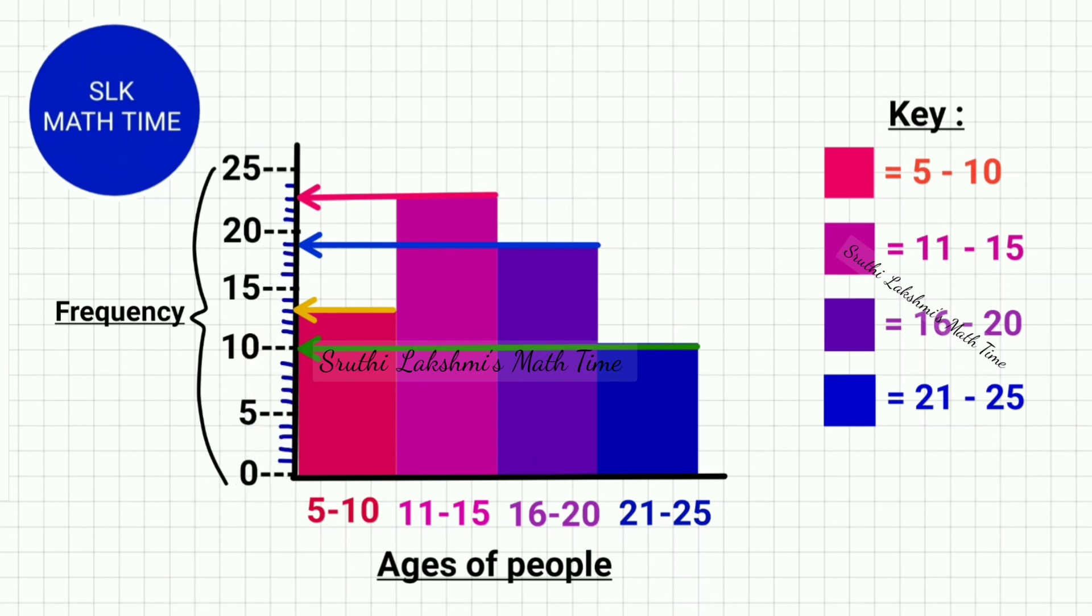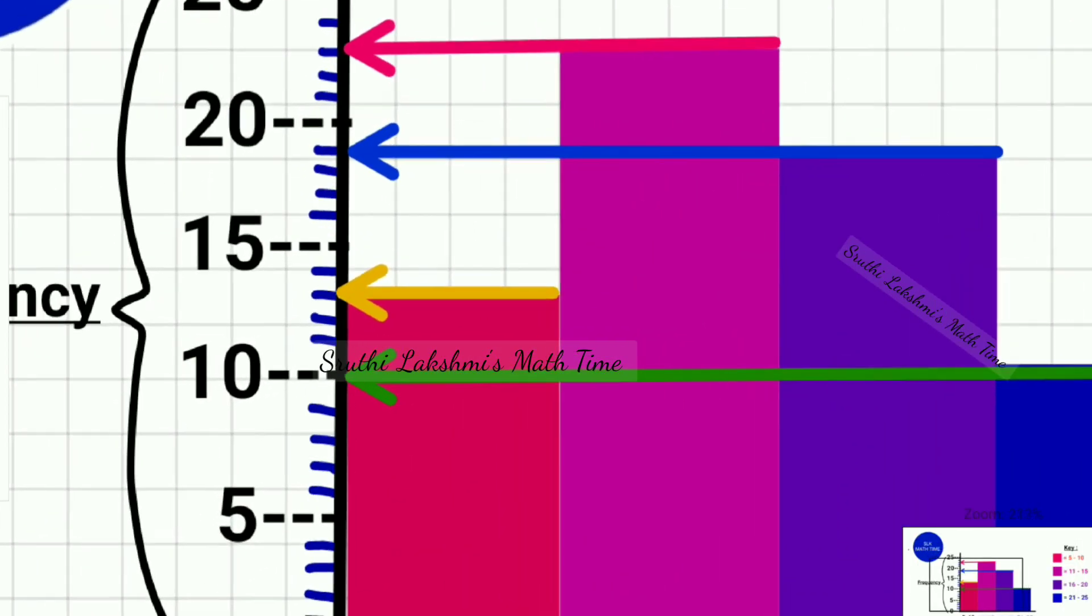4 and so on, we can write it 0, 5, 10, 15, 20, 25. So usually on the graphs there won't be line if it's written like this. But I have written the lines to make it more easier for you to see the numbers.